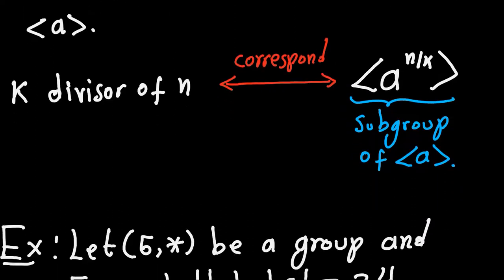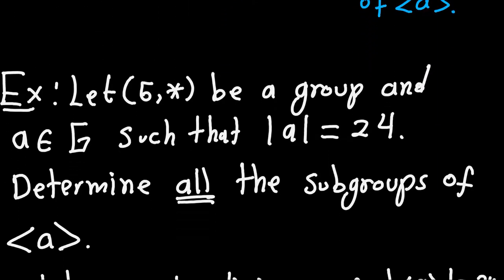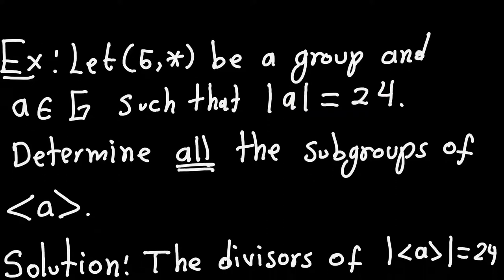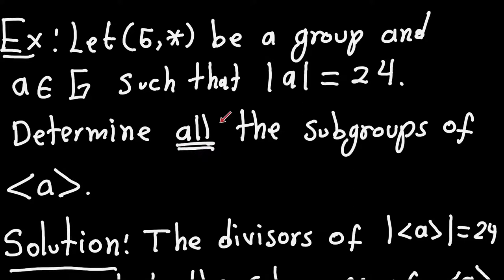Let's look at an example. Suppose we have a group and an element A such that A has order 24. I'm choosing this arbitrarily — I could choose 40 or 50, the reasoning will be the same. What we want to do is find all the subgroups of the cyclic group generated by A, which has order 24.